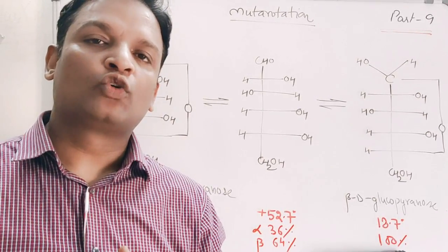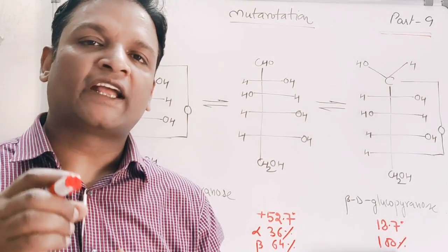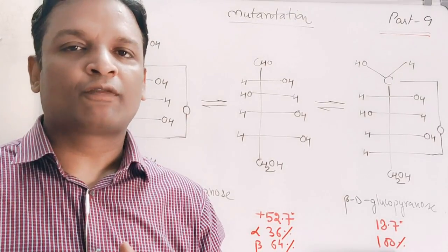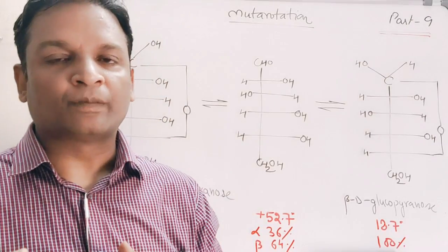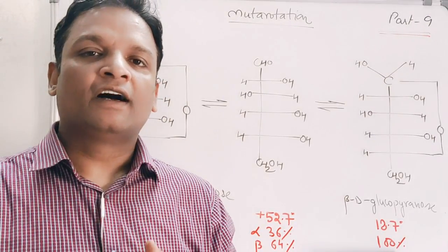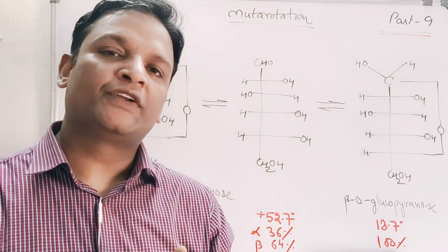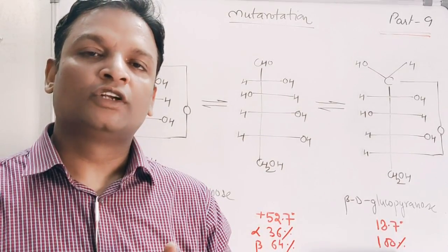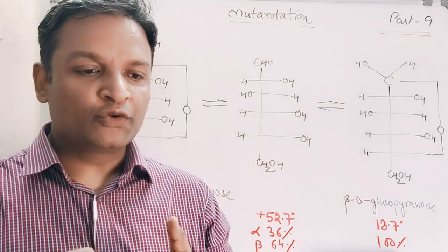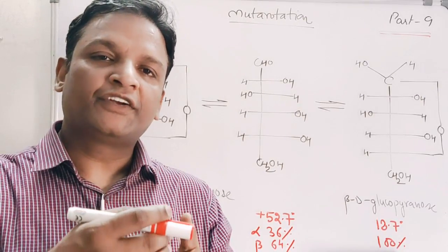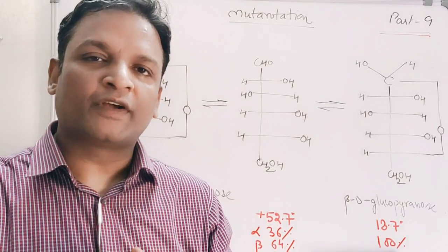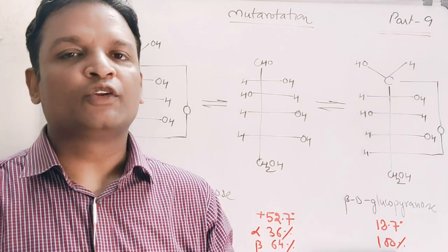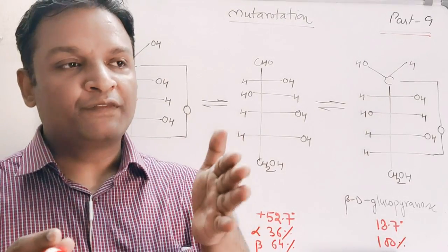When I take alpha-D-glucose and dissolve it in water, I observe a very different type of phenomenon — a change in specific rotation of the sugar molecule. The alpha-D-glucose solution initially has a rotation value of +112°. With the passage of time, this rotation value changes continuously until it reaches a constant value of +52.7°.